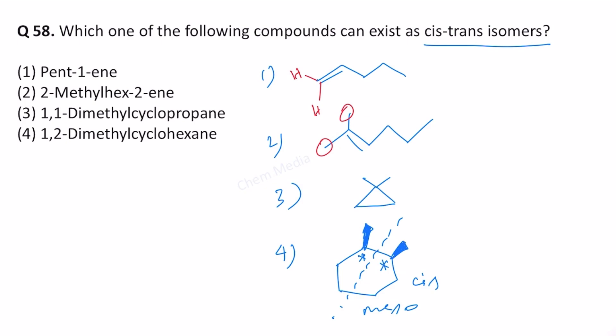And then the trans isomer we can write like this. Let us just change the absolute configuration at one place. So that's the trans form. This is optically active. Therefore, option 4 is the correct choice here.